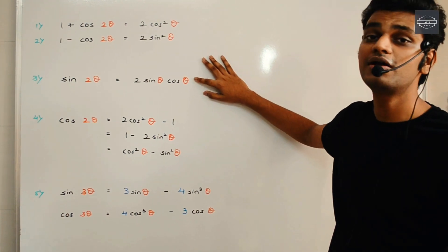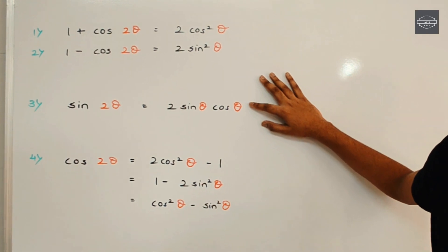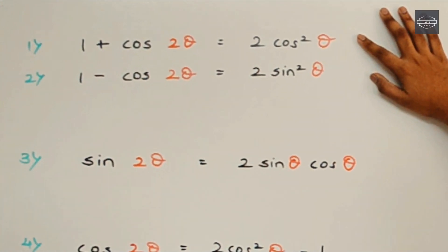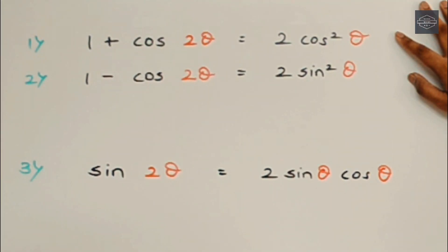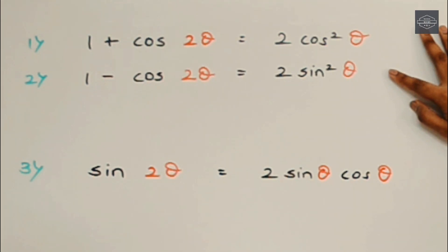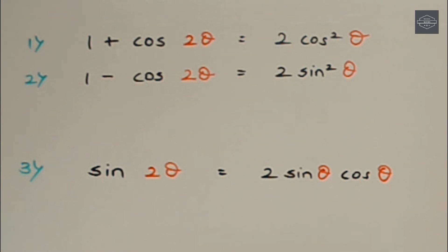Continuing the rhythm: sin 2 theta, 2 sin cos — sin 2 theta, 2 sin cos — 1 plus cos, 2 cos square — 1 plus cos, 2 cos square — 1 minus cos, 2 sin square — 1 minus cos, 2 sin square — sin 2 theta, 2 sin cos — sin 2 theta, 2 sin cos.